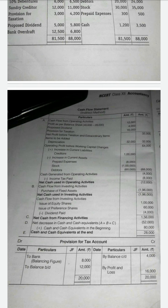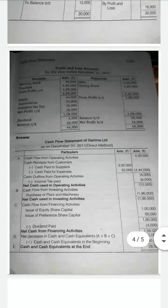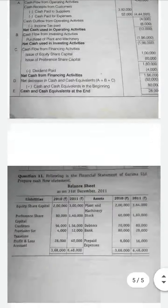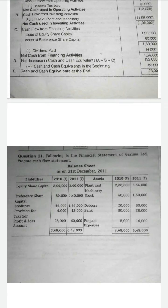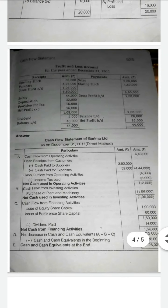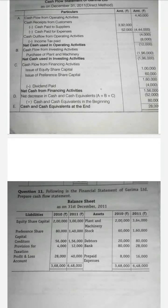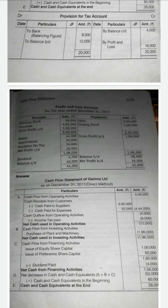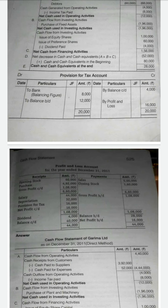Before starting the problem we have to prepare two types of accounts. In this sum the provision for taxation is given in the balance sheet and also in the profit and loss account. In the balance sheet, provision for taxation for 2010 is the opening and 2011 is the closing. In the profit and loss account there is a separate provision for taxation — the current year provision is Rs. 16,000. With this information we have to prepare the provision for tax account.